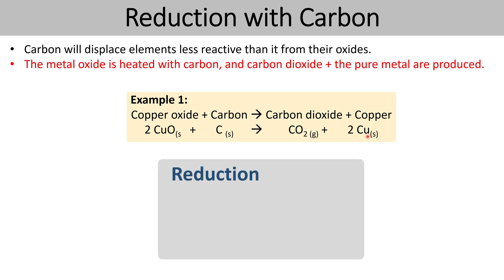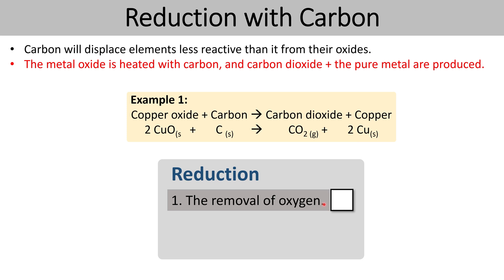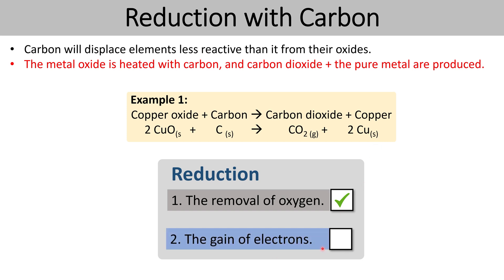This is an example of reduction for two different reasons. The first reason is that it involves the removal of oxygen — the copper was bonded with oxygen and now it's not, so we can say copper has been reduced. The second reason is that the copper has gained electrons. The copper is a 2+ ion inside copper oxide to cancel out the 2− charge of the oxygen, whereas when anything's an element it has a zero charge, so it's gone from 2+ to zero, meaning it must have gained two negative charges.